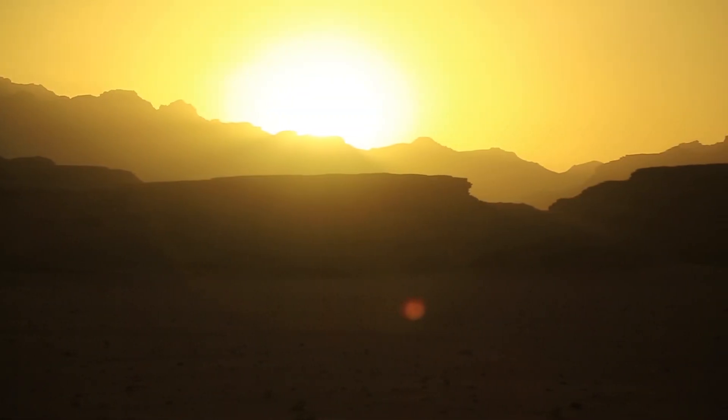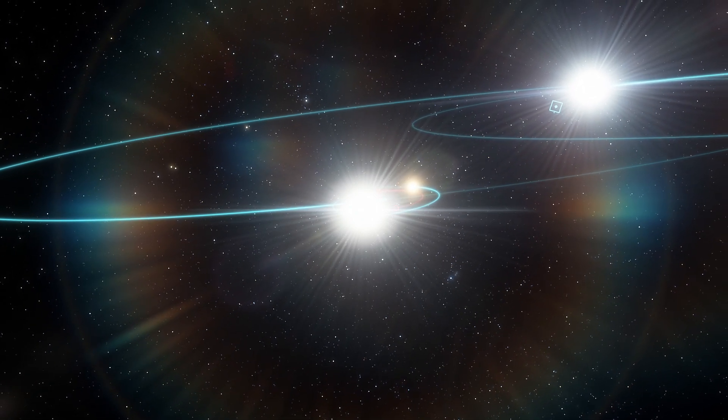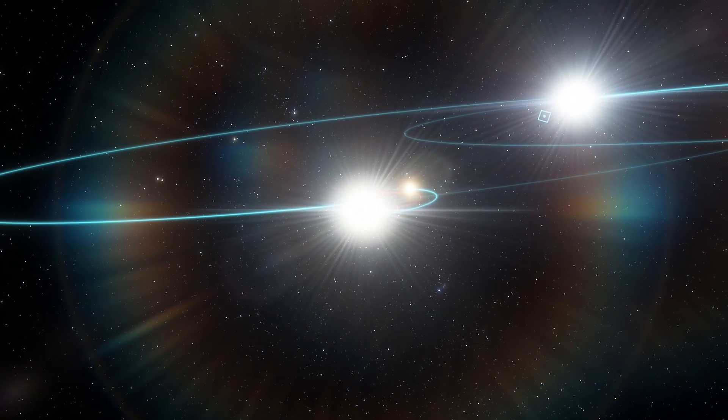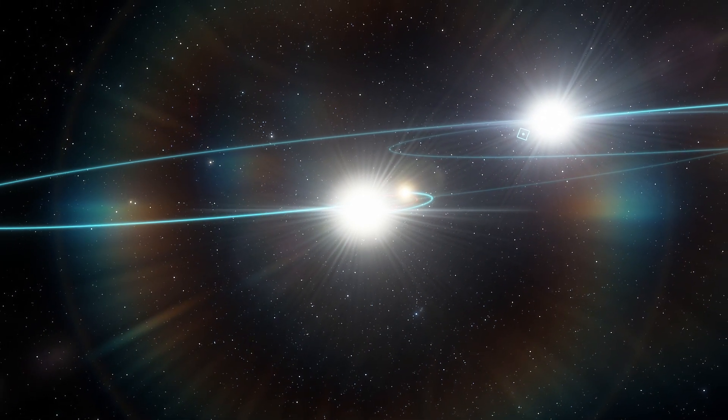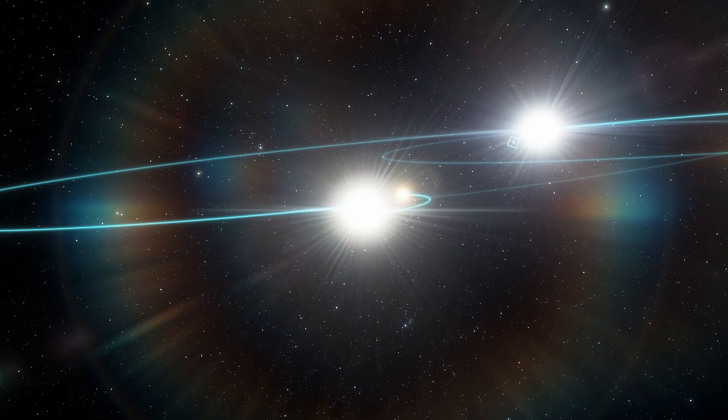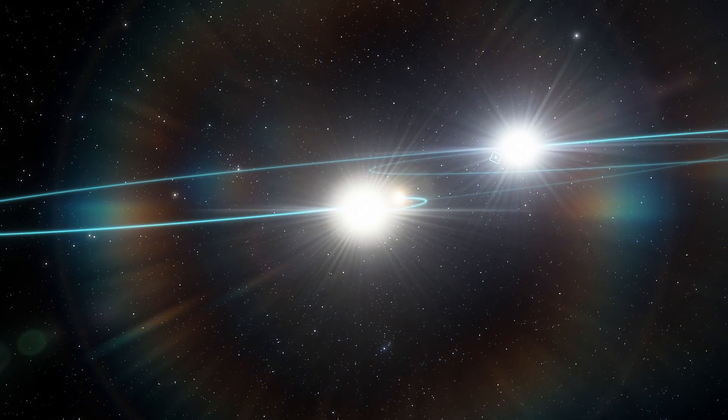This alien world, discovered using the Keck 1 telescope atop Mauna Kea in Hawaii, sweeps every 3.3 days around a star that is circled every 25.7 years by a pair of stars locked in a 156 day orbit. The gas giant became the first known planet to reside in a classic triple star system.